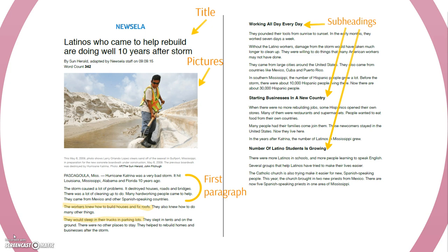After finishing reading the first sentences of all the remaining paragraphs, I will read the whole last paragraph. 'The Catholic Church is also trying to make it easier for new Spanish-speaking people. This year, the church brought in two priests from Mexico. There are now five Spanish-speaking priests in one area of Mississippi.' Now I have an idea that the people who came to fix things stayed in this country. So now I have a main idea for this story: it's about people who came from Spanish-speaking countries to a part of the United States to help rebuild after a storm, and they stayed.